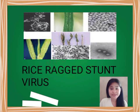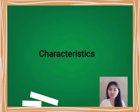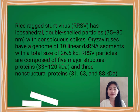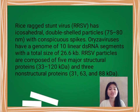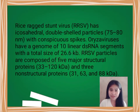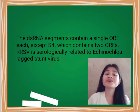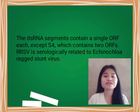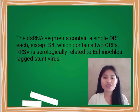Rice Ragged Stunt Virus has icosahedral double-shelled particles with conspicuous spikes. Reoviruses have a genome of 10 linear dsRNA segments with a total size of 26.6 kb. Rice Ragged Stunt Virus particles are composed of 5 major structural proteins and 3 non-structural proteins. The dsRNA segments contain a single ORF each, except S4, which contains 2 ORFs.